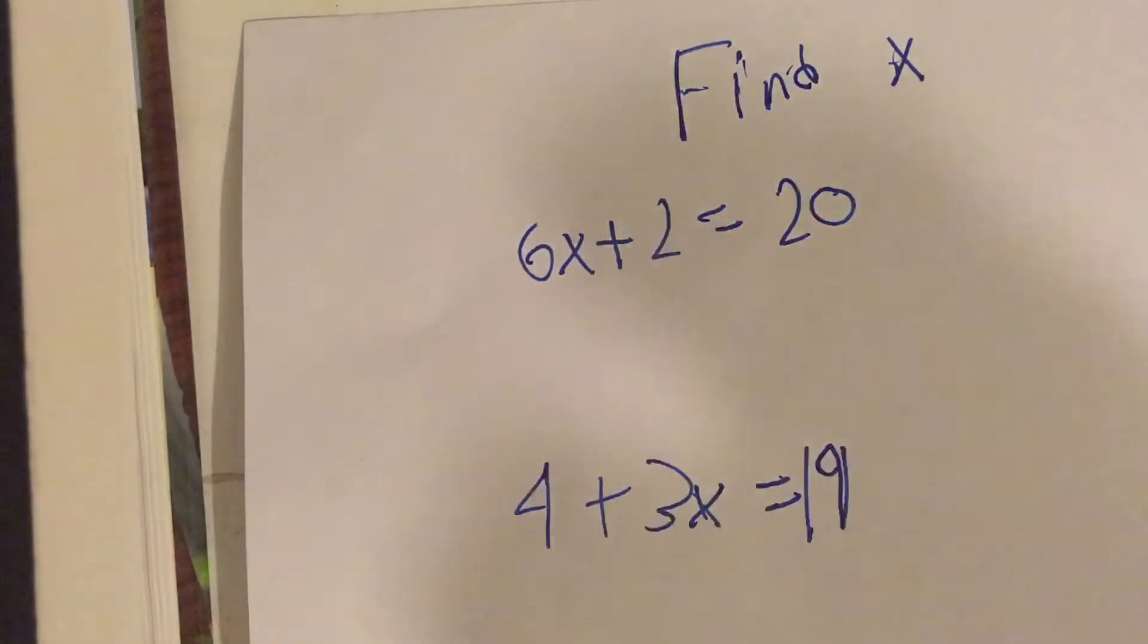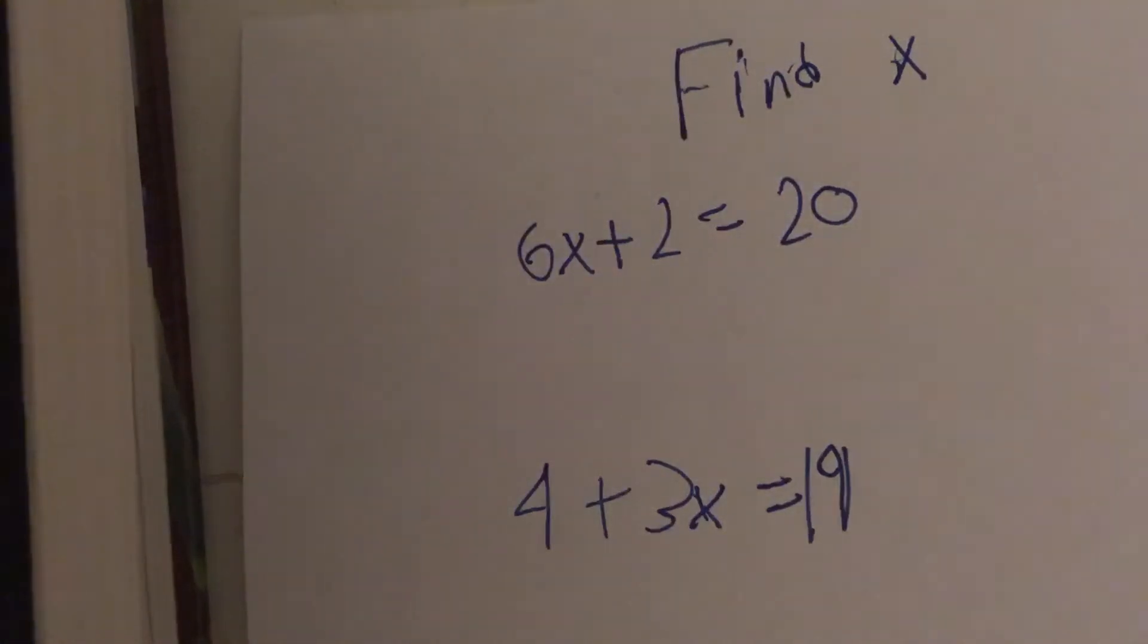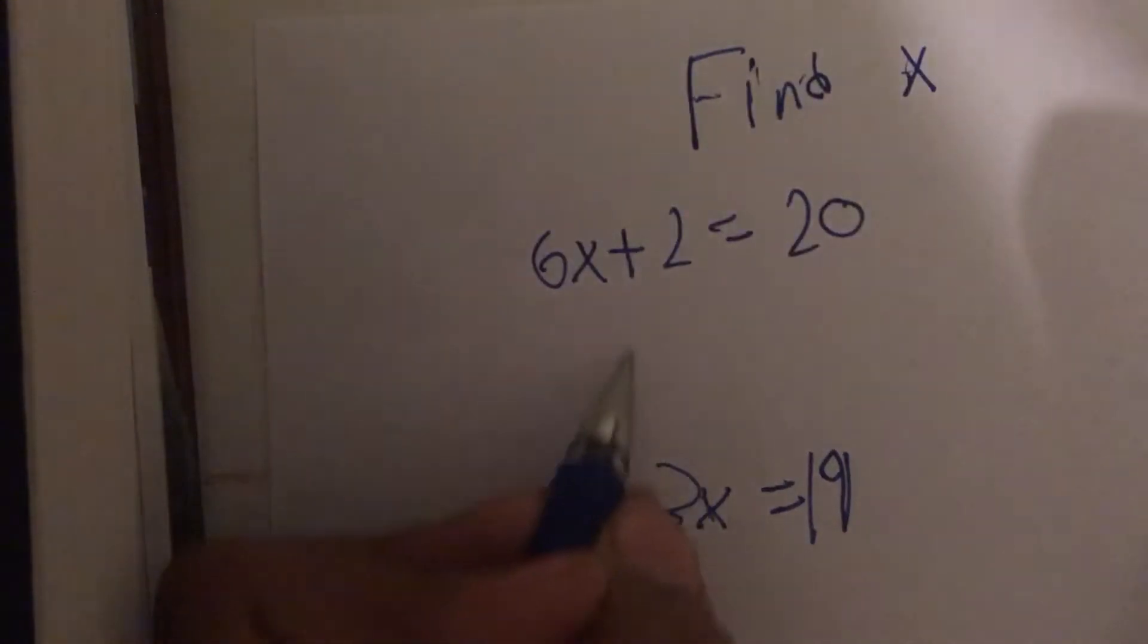Now, what do we want to do when we're looking to find a variable on one side? The first thing we're going to do is try to isolate the variable. In this case, for all of these equations, our variable will be x.